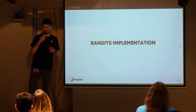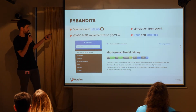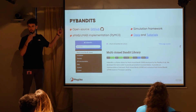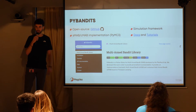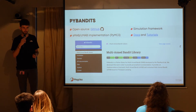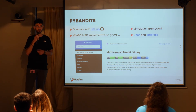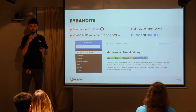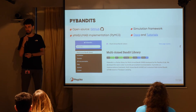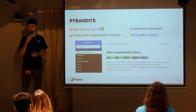Now I want to talk about a concrete example of what we developed and implemented: PyBandits. PyBandits is a Python package released as an open source product on GitHub. It has a stochastic and contextual multi-bandit implementation. Behind the hood it uses PyMC3, the most well-known Python library for Bayesian inference. We also implemented a simulation framework where you can try the algorithm under different action, reward, and context settings. It comes with documentation and tutorials.